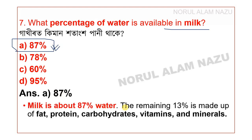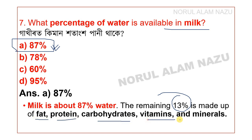Milk is about 87% water. The remaining 13% is made up of fat, protein, carbohydrates, vitamins, and minerals.